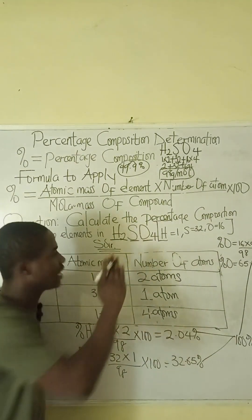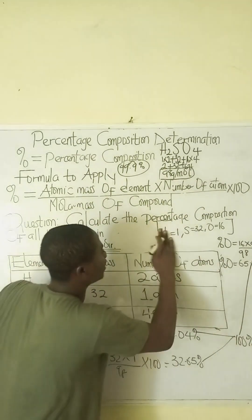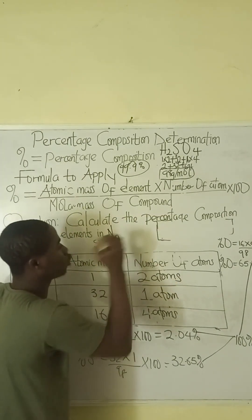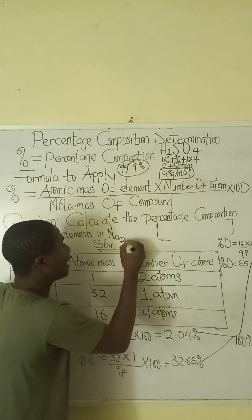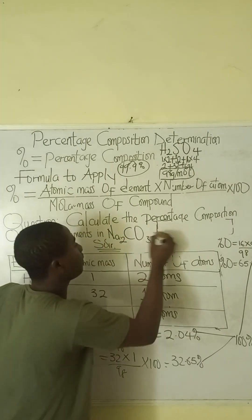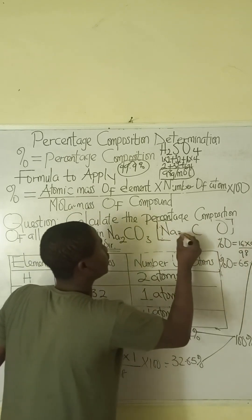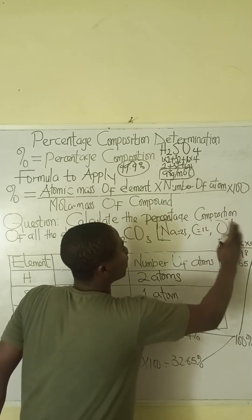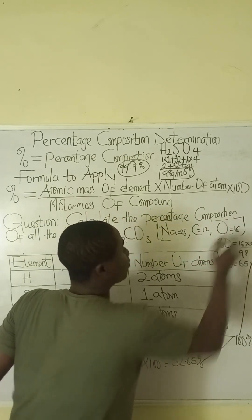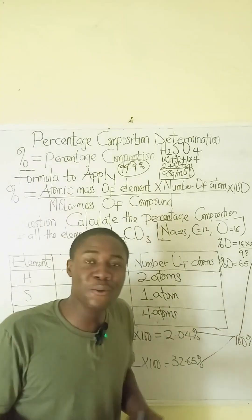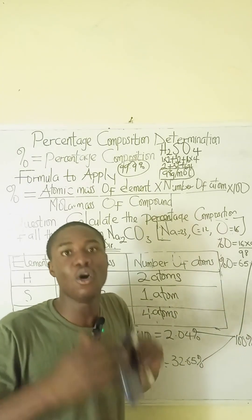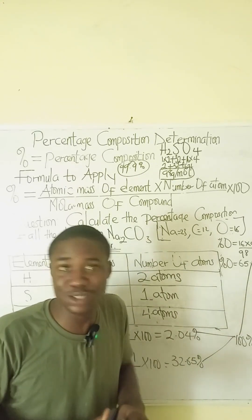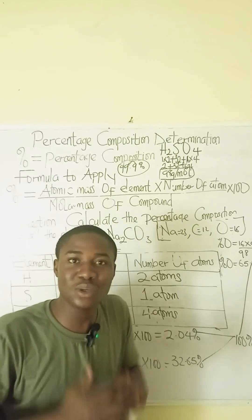Now solve this for yourself and provide the answer in the comment section: calculate the percentage composition of all elements in Na₂CO₃. The elements are sodium, carbon, and oxygen. Atomic masses: sodium = 23, carbon = 12, oxygen = 16. If you find this video helpful, click the follow or subscribe button and share with your friends.